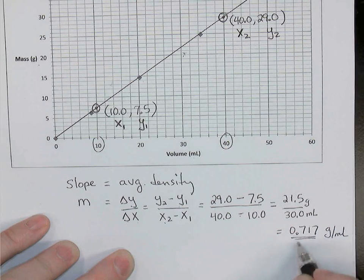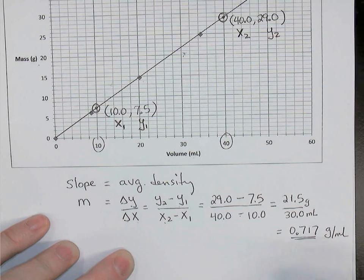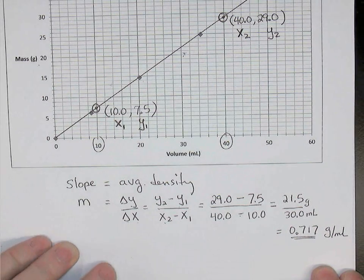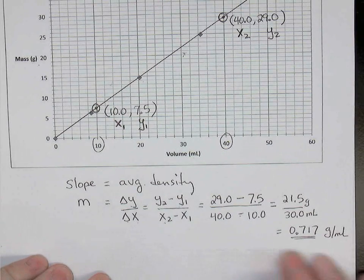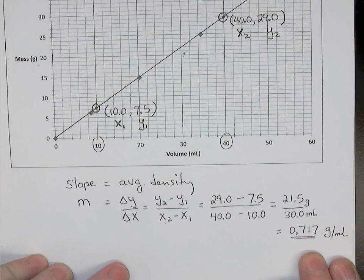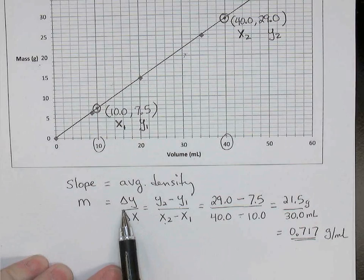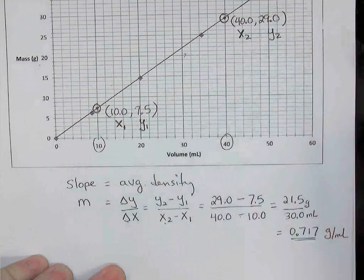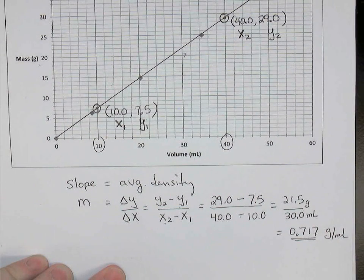Remember that the zeros at the beginning of a measured number are not significant. So 717 would be the three significant digits. So there's the density of this liquid calculated from the slope of the line through the points on a graph of mass versus volume.